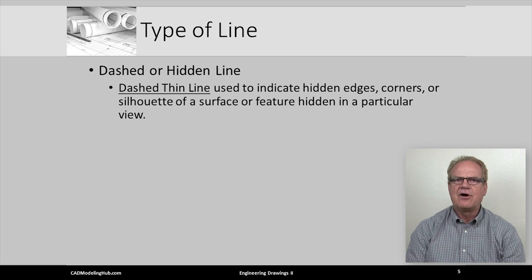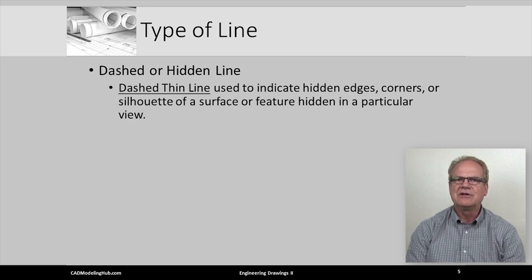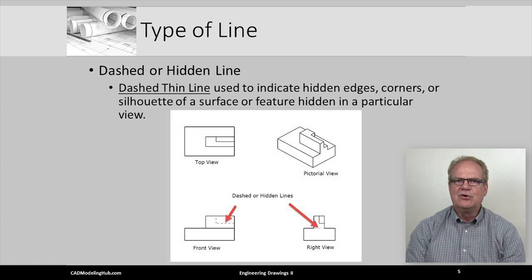Equally important are the dashed, or hidden lines, provided they add clarity to the orthographic views. These lines are thin and comprised of a series of short dashes that indicate hidden edges, corners, or silhouettes of surfaces not visible in a particular view.